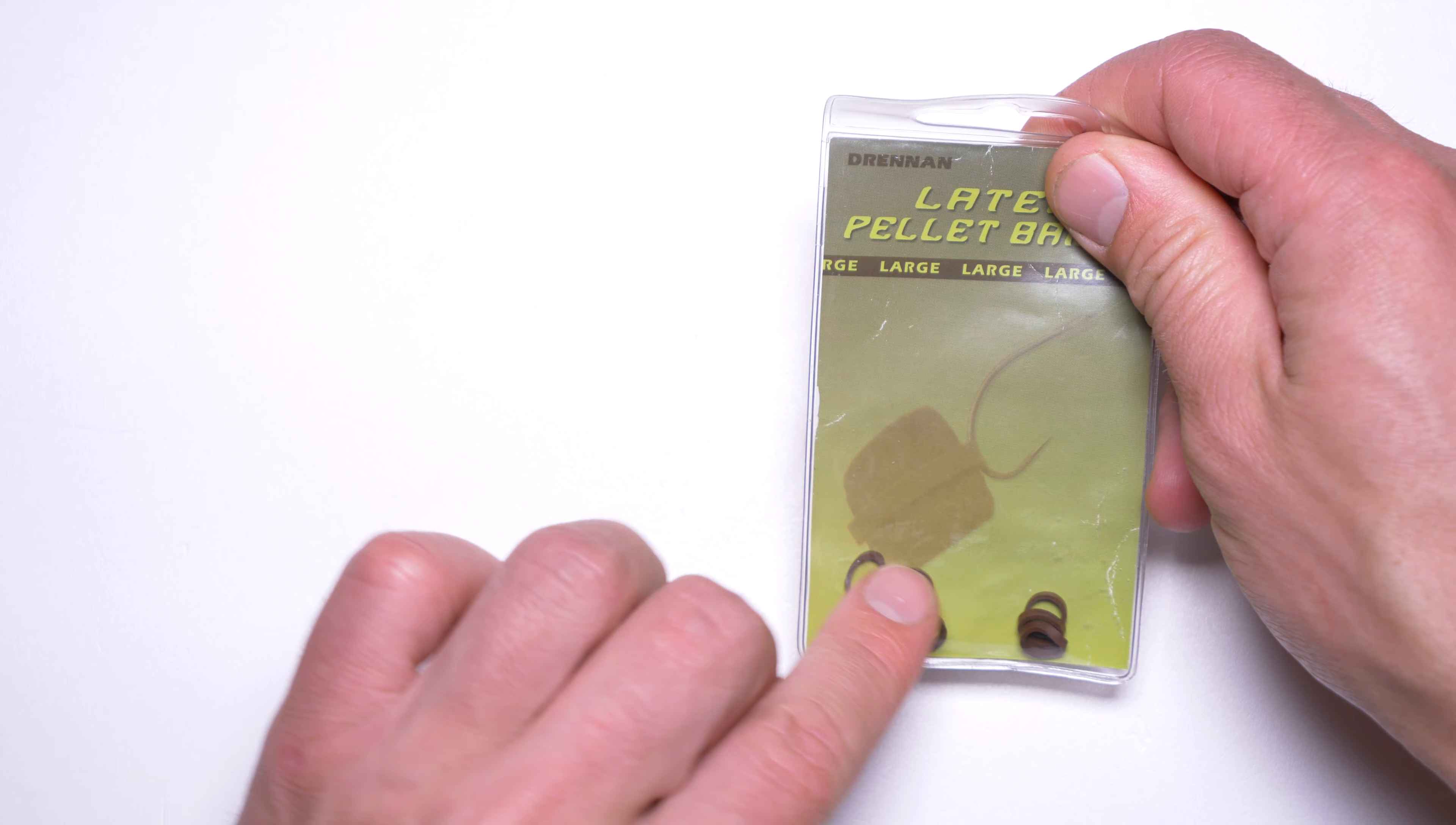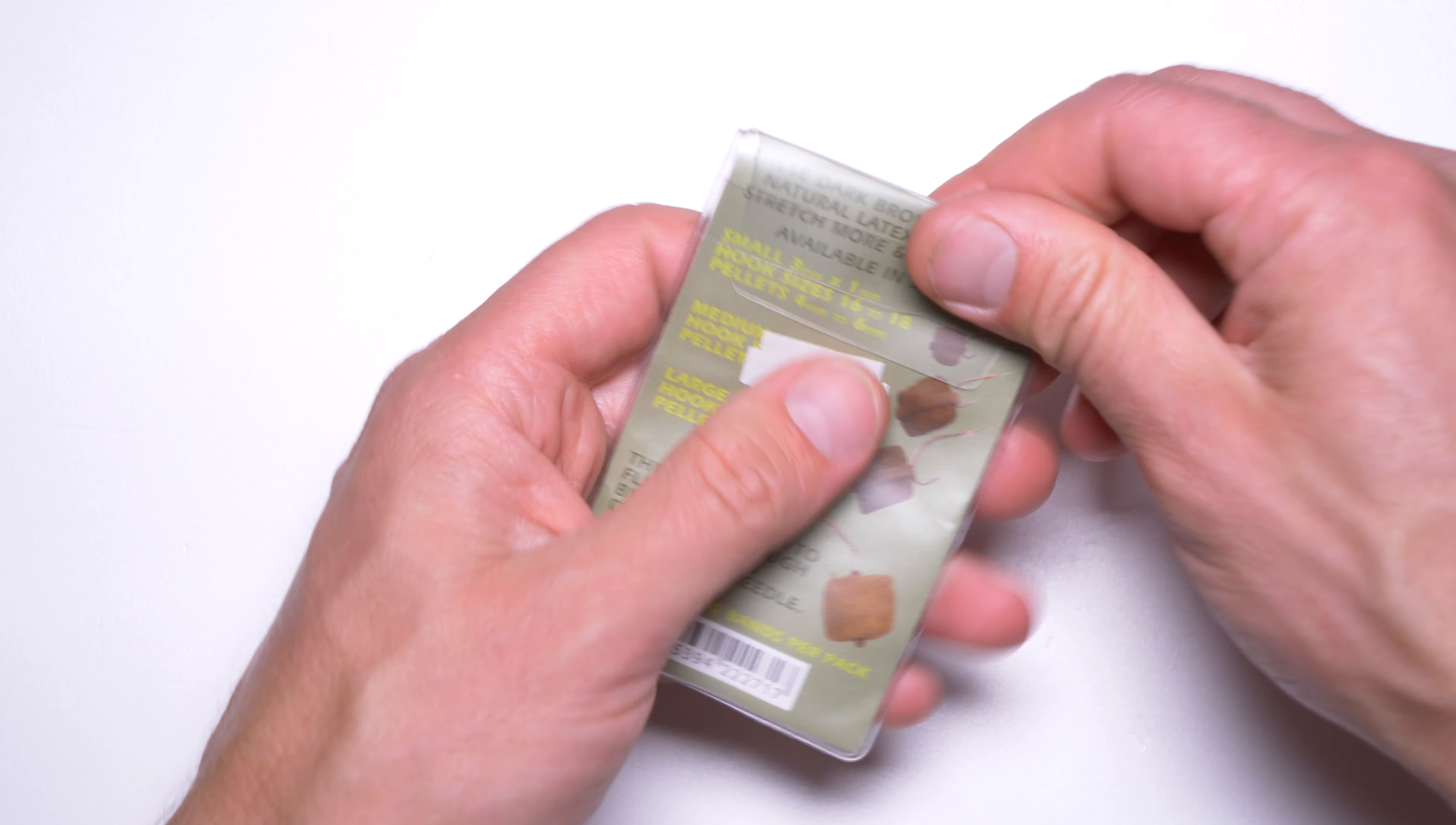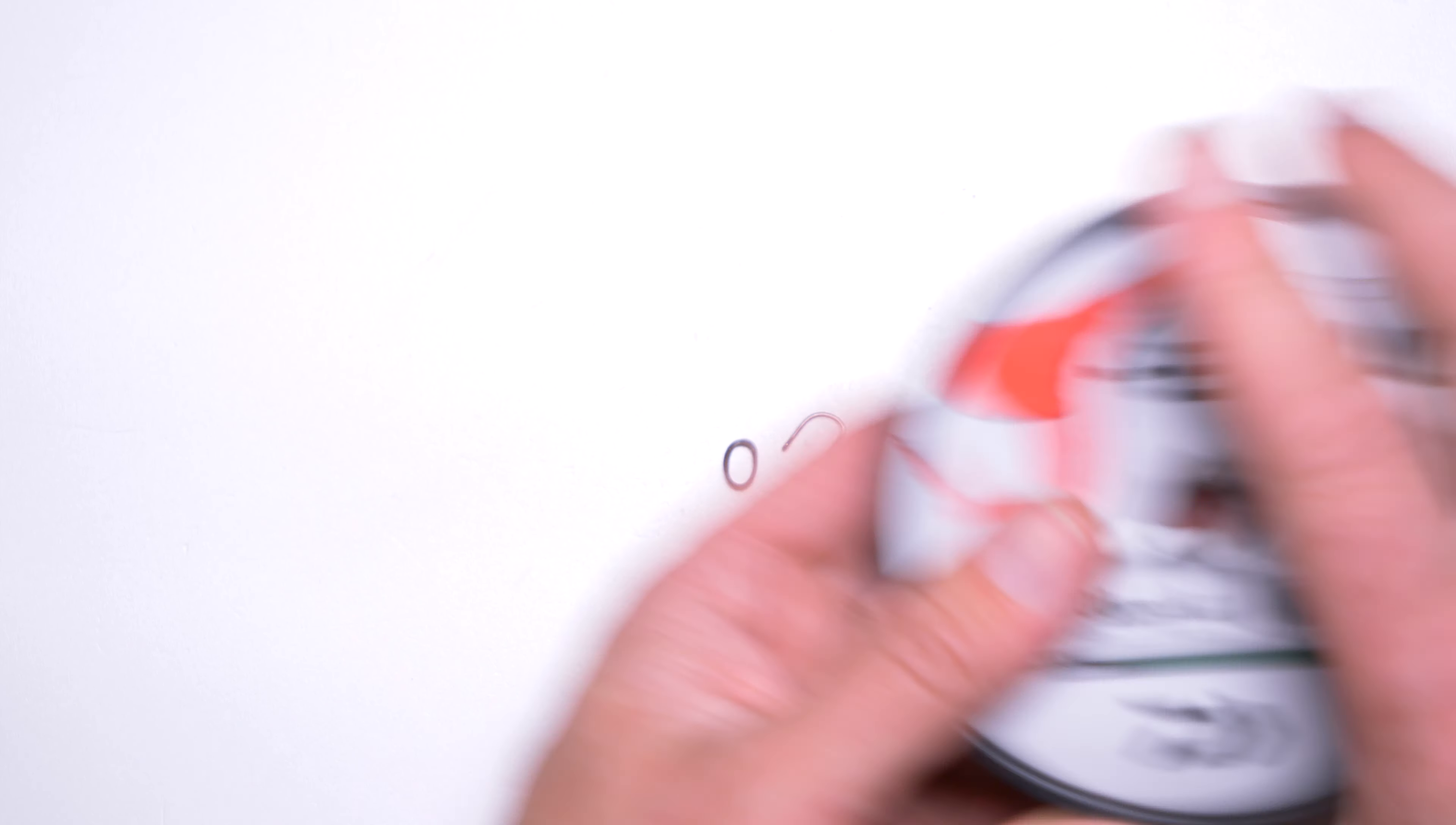You should investigate which pellets work for you. For me, these Drennan ones work best because they hold the pellet inside the best. If I need my hook bait to blend in well with the band, I replace the hook bait quite often.